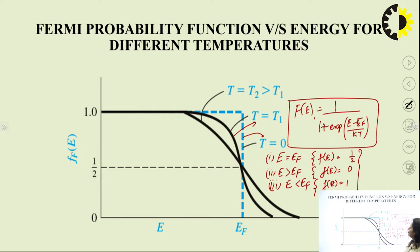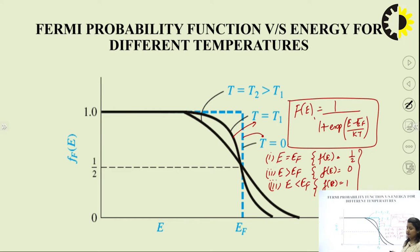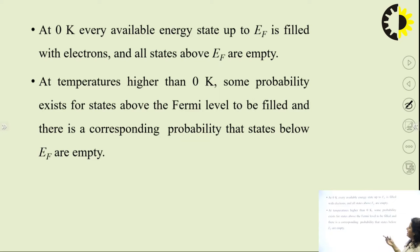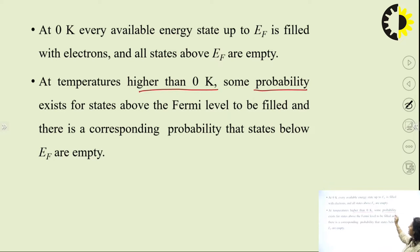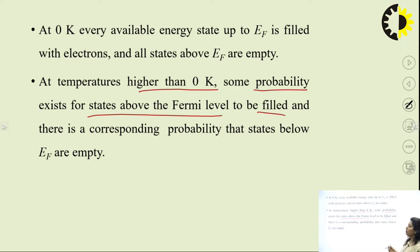This Fermi probability function graph shows how temperature variation changes the Fermi level. At T = 0, every available energy state up to E_f is filled with electrons and all states above E_f are empty. At temperatures higher than 0 K, some probability exists for states above E_f to be filled, and there is a corresponding probability that states below E_f are empty.